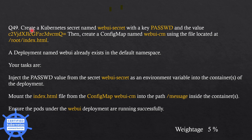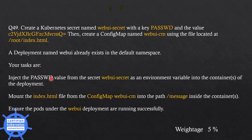The next question is: create a Kubernetes secret named webuasecret with a key passwd and the given value. Then create a ConfigMap named webuacm using the file located at /root/index.html. A deployment named webuai already exists in the default namespace. Your tasks are: inject the passwd value from the secret as an environment variable into the containers, and mount the index.html file from the ConfigMap into the path /messages inside the container. Ensure the pods under the webuai deployment are running successfully.